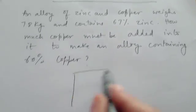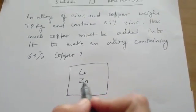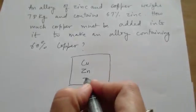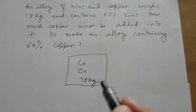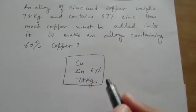So in this question, what we have? We have an alloy of copper and zinc. Copper is Cu, zinc is Zn actually. So we have 78 kg and it is given that 67% is zinc.